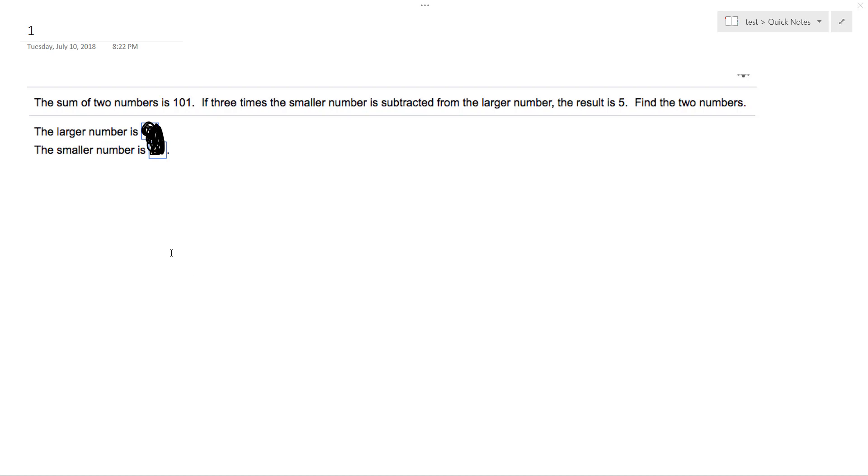This is a setup of two equations, two unknowns. We'll make this x + y = 101, and then we'll make the smaller number x and the larger number y.